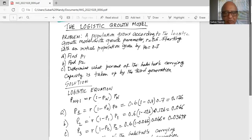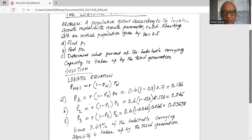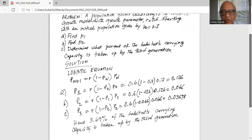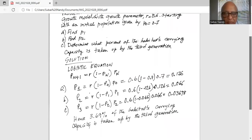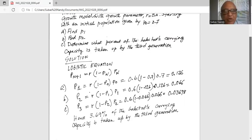Now we will calculate p3 in the same way. p3 is equal to r growth parameter multiplied by 1 minus p2 times p2, which is 0.6 times in parenthesis 1 minus 0.066, because p2 itself is 0.066 as we calculated in the prior step, multiplied by 0.066, which works out to be 0.03698. Hence 3.69 percent of the habitat's carrying capacity is taken up by the third generation. That's a fancy way of saying what is the value of the population in the third parameter.